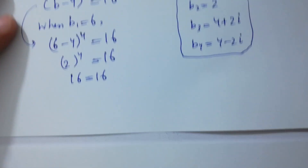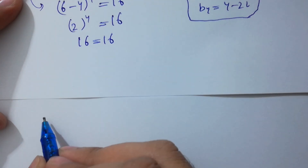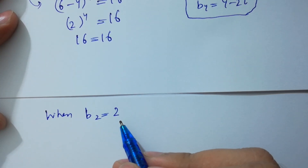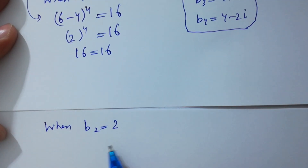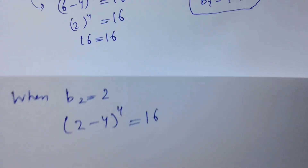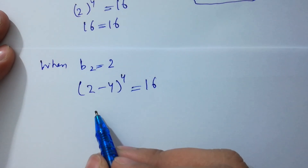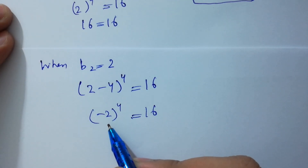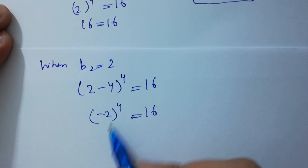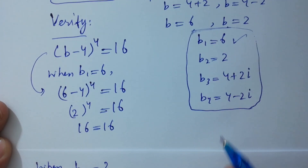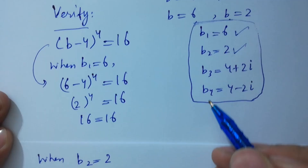Verify when b₂ = 2. Put the value: (2−4)^4 = (−2)^4 = 16. And (−2)^4 is 16 since the negative signs cancel. So 16 = 16, which satisfies the equation. b₂ = 2 is correct.